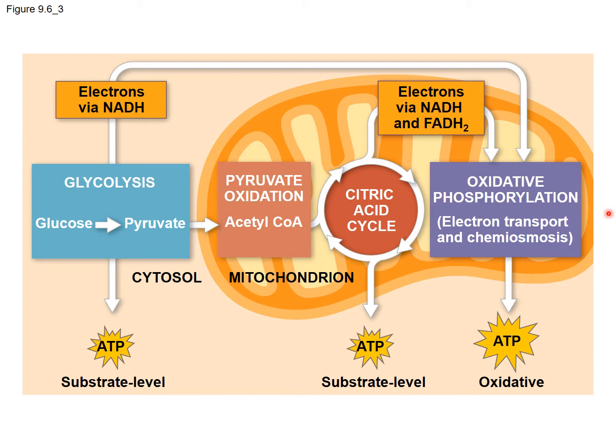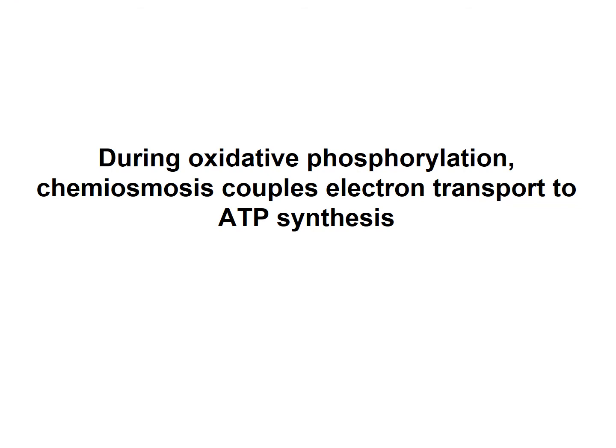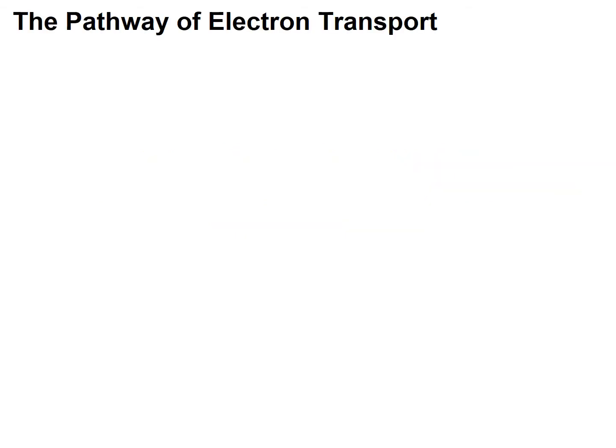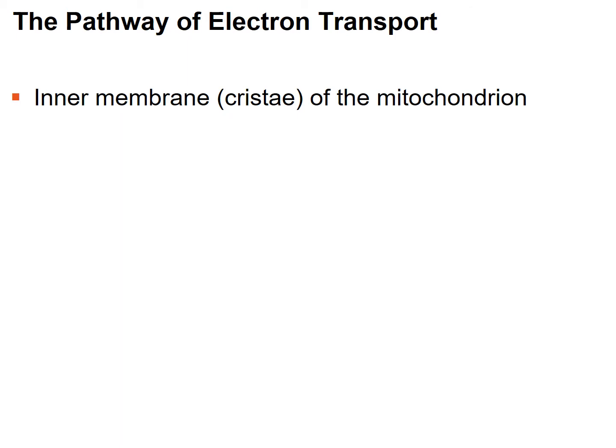This step has two phases. The first phase is the electron transport chain, or electron transport. The second phase is chemiosmosis, which actually couples the transport of electrons to the synthesis of ATP. Electron transport occurs in the inner membrane of the mitochondrion within the cristae.